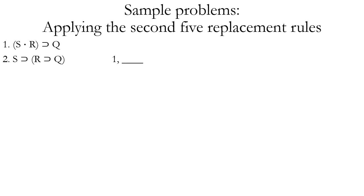Now let's do some sample problems. The first few will be filling in the blank — we're given one premise and another that follows from it logically, and we have to name the rule used to derive the second premise. If you look at the first premise, (S dot R) horseshoe Q, you can notice a pattern — those same simple propositions S and R are in line two of the proof, but S has been exported out of the parentheses. So yes, that implies we can use the exportation rule to derive that line of the proof.